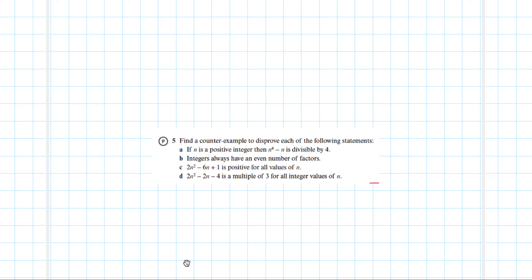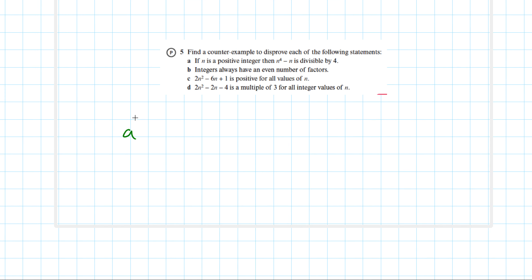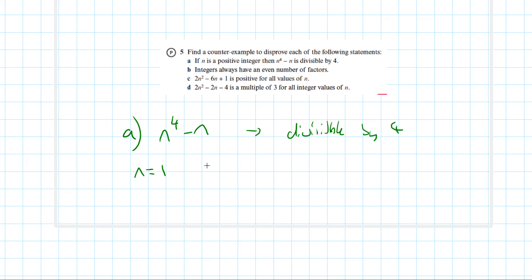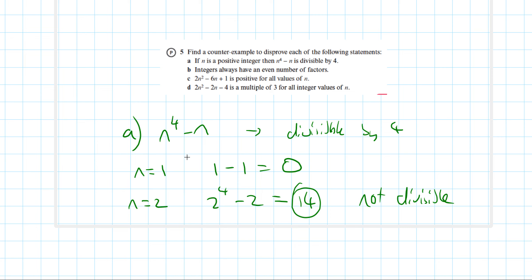Question 5 is to find a counterexample to disprove the following statements. This is an easy question in the exam but you want to find the quickest counterexample. Part A: if n is a positive integer, then n⁴−n is divisible by 4. Trying n=1: 1−1=0, which is divisible by 4, so skip that. Trying n=2: 2⁴−2 = 16−2 = 14, which is not divisible by 4. So n=2 is our counterexample.